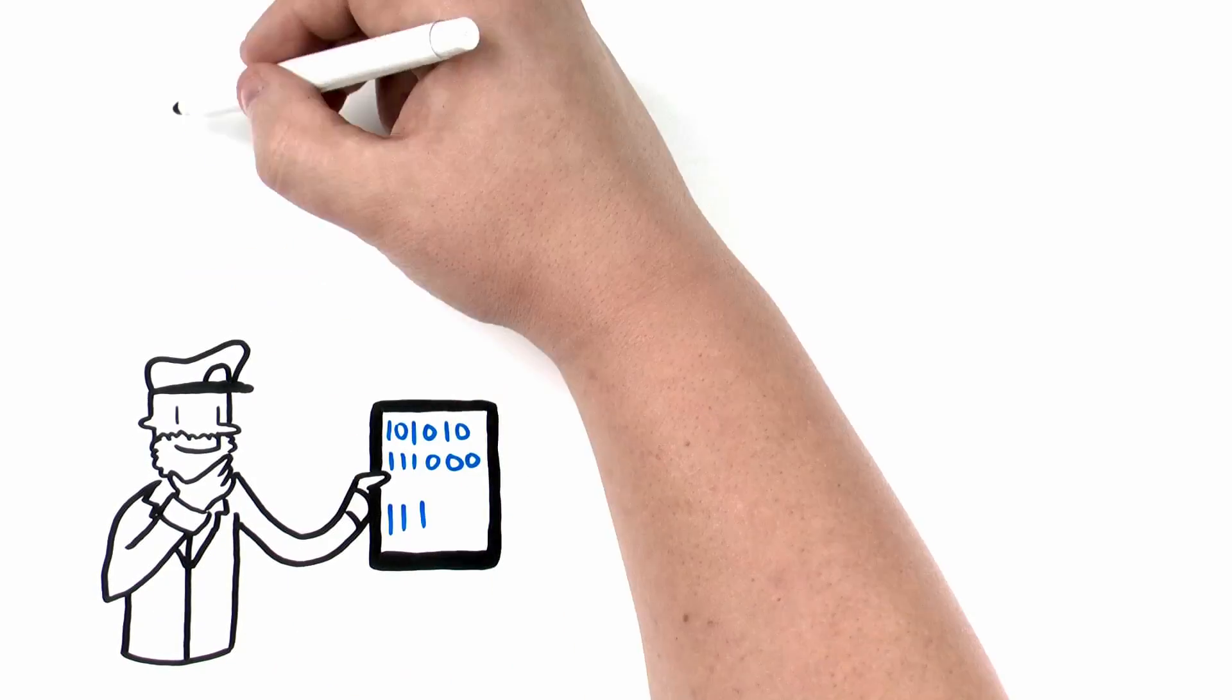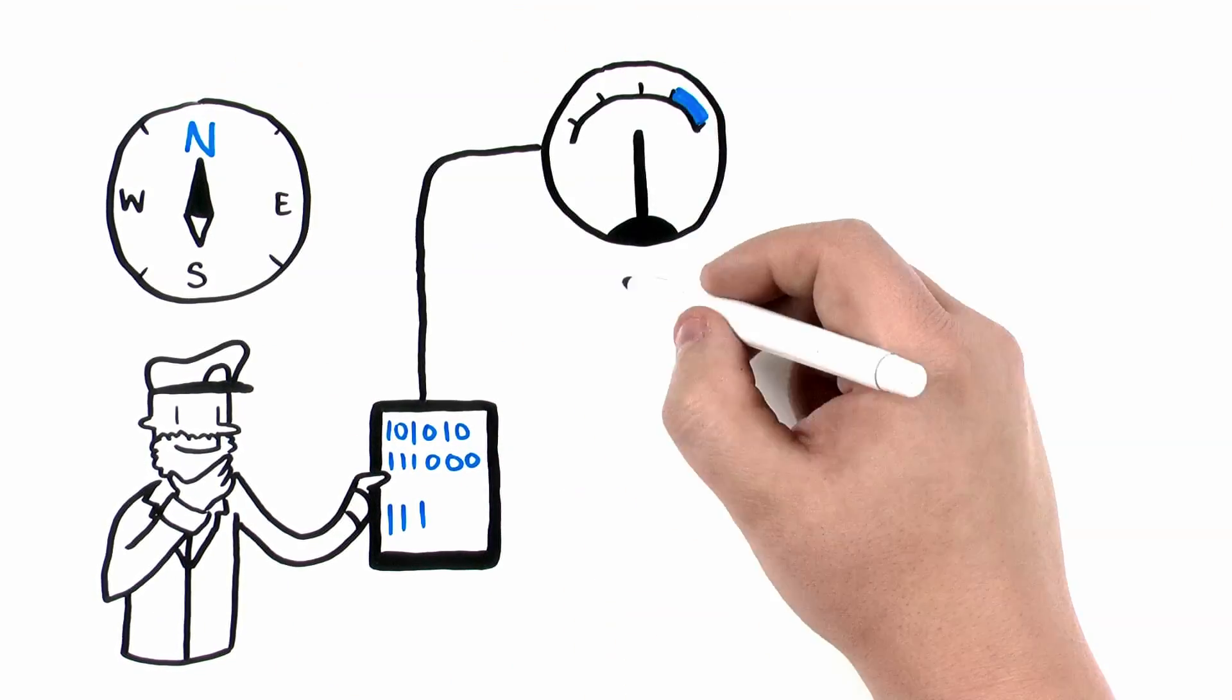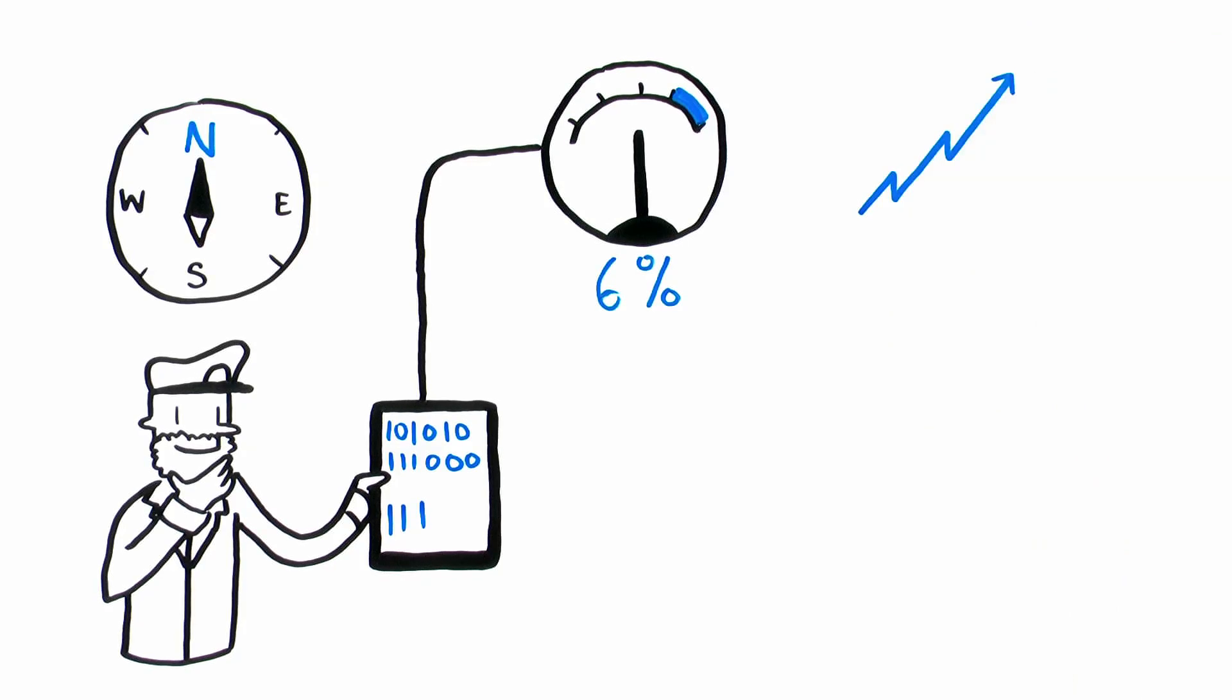Companies who use data-directed decision-making see a productivity boost of up to 6%. Imagine what that would do to your bottom line.